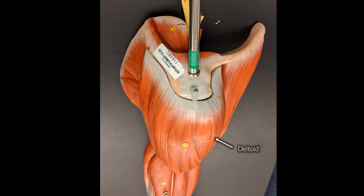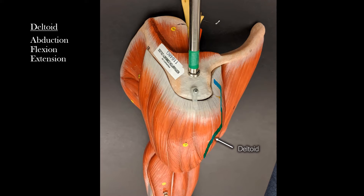We'll start with the deltoid — most of you have probably heard of the deltoid before taking any anatomy. When using the entire deltoid, you will abduct the shoulder. But if you're just using the anterior fibers, that will cause flexion at the shoulder, and just using the posterior fibers will cause extension of the shoulder.